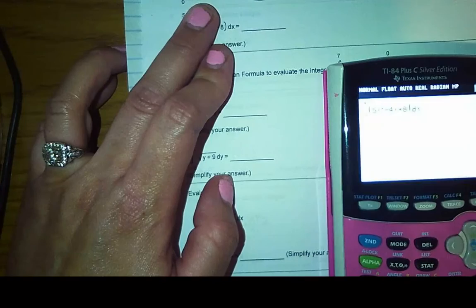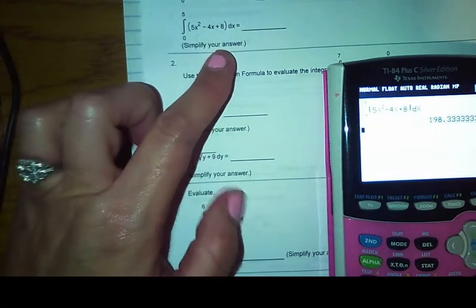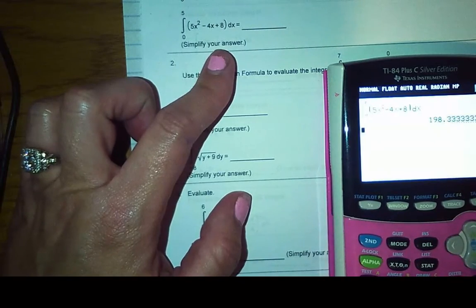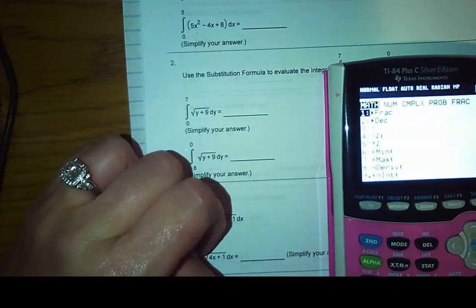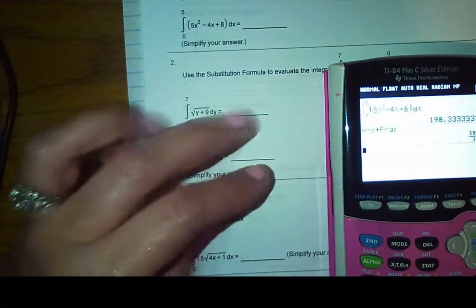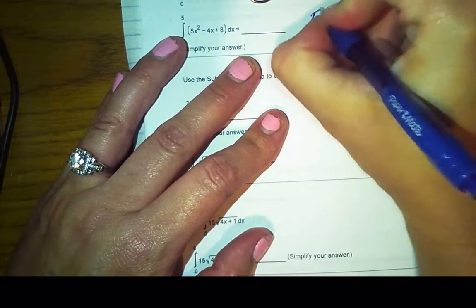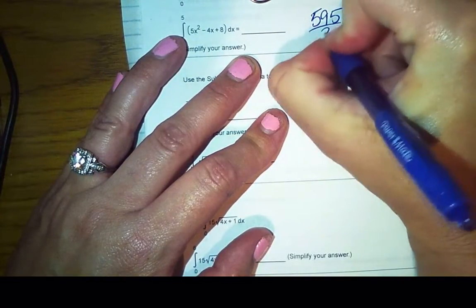So hit enter, it'll think for a second, and I get 198.333. It says to simplify your answer. So hit math, and then enter twice, and it will change it into a fraction. So 595 over three.